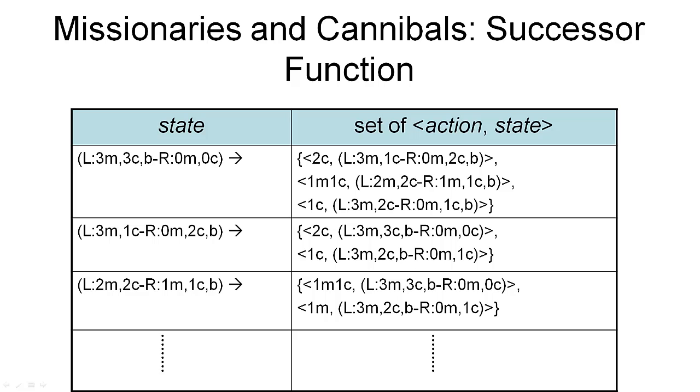Going back to the missionaries and cannibals example, let's try to define this as a search problem. So we need to define the four components: the initial state, which was given to us as part of the problem; the goal state, which was also given to us as part of the problem; then the path cost function, where we simply assume that every step has the same cost. So the only thing that is slightly more complex is the successor function.